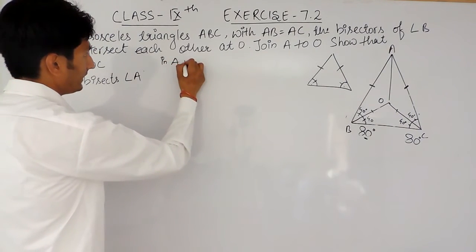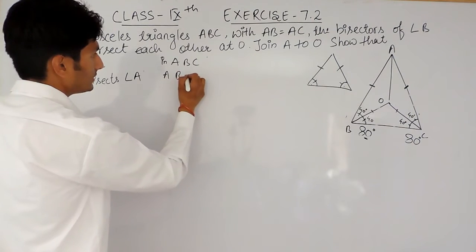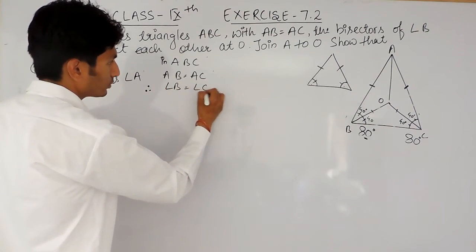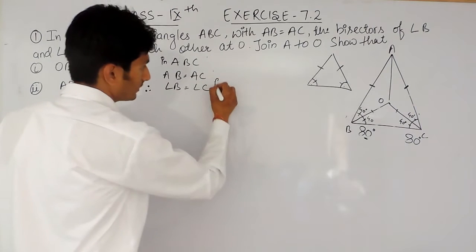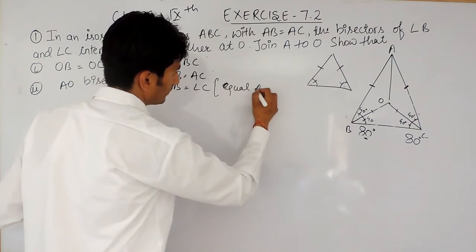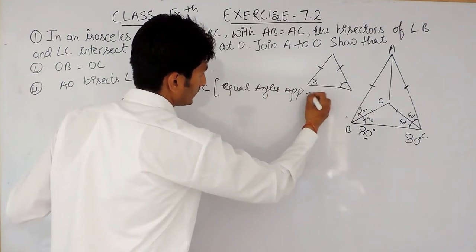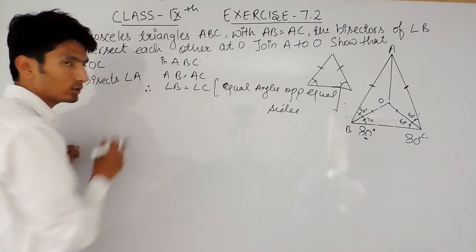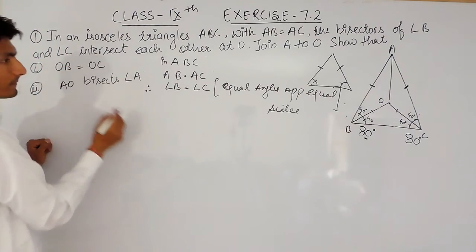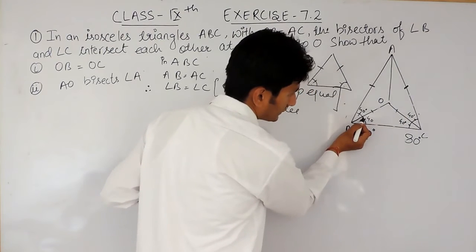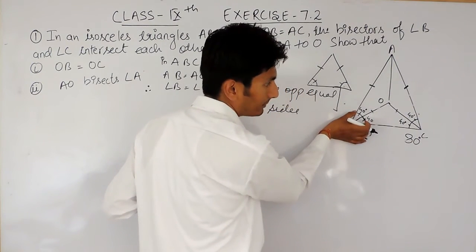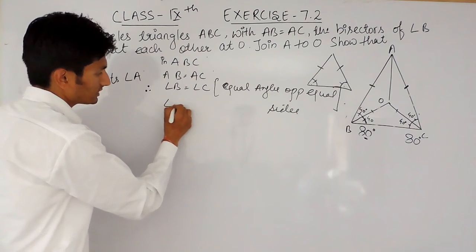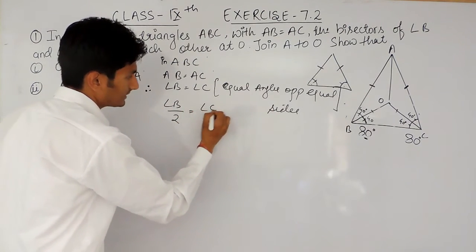In triangle ABC, it is given that AB equals AC. Therefore, angle B must equal angle C — angles opposite to equal sides. Now, if these two angles are equal, and we have the bisectors, this half-angle is half of the complete angle. So dividing the equation by 2, we get angle B over 2 equals angle C over 2.